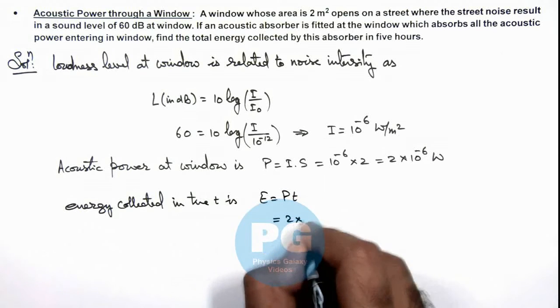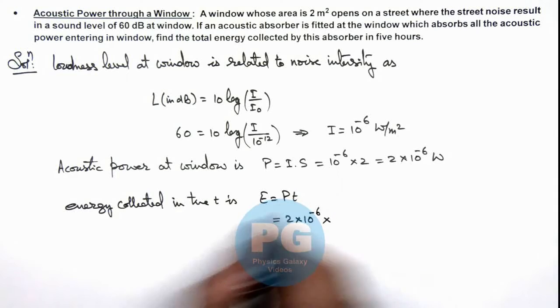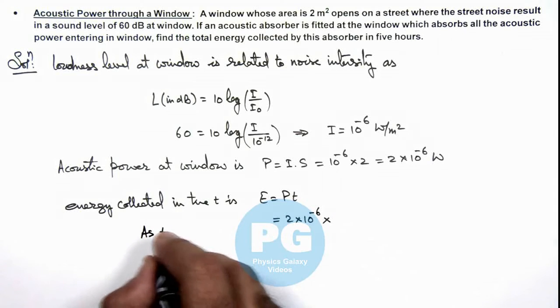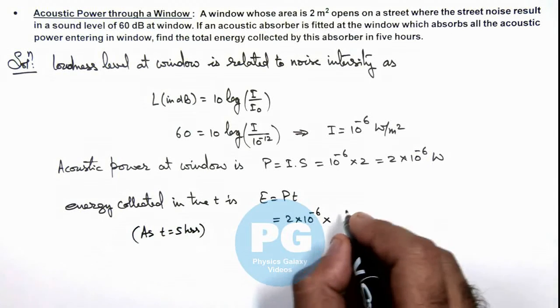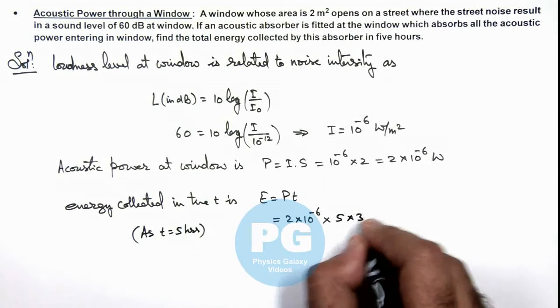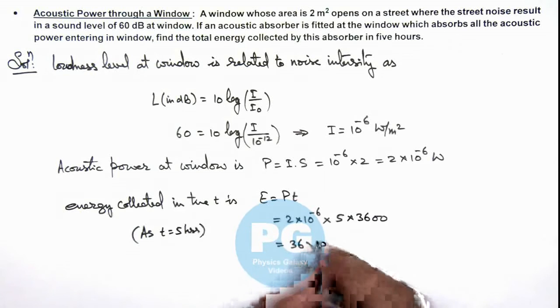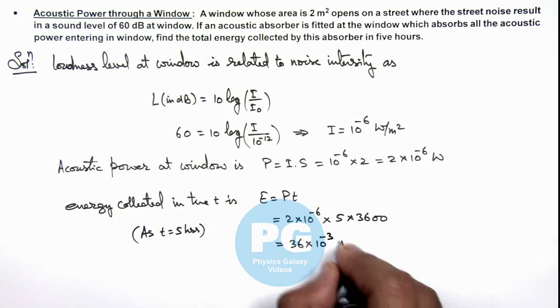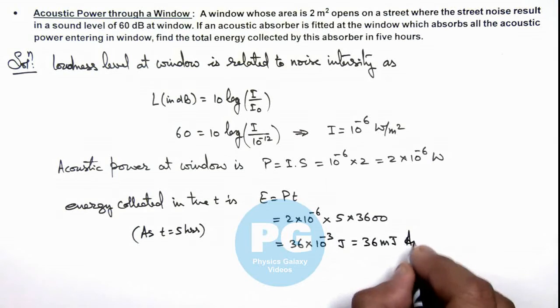This is 2 into 10 to power minus 6 multiplied by time given to us is 5 hours. So we can write it 5 multiplied by 3600 in seconds, which gives us 36 into 10 to power minus 3 joule, or this is 36 millijoule, that is the result of this problem.